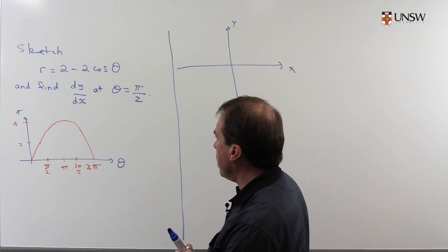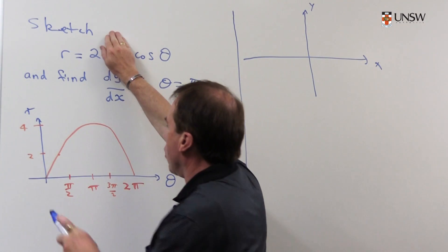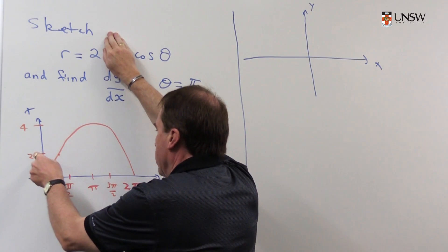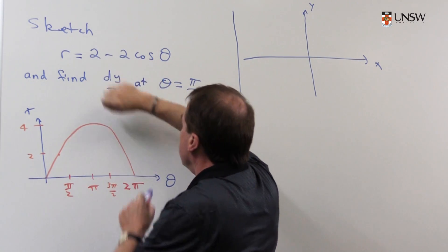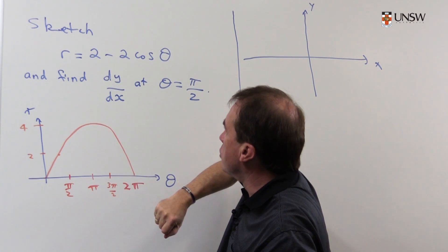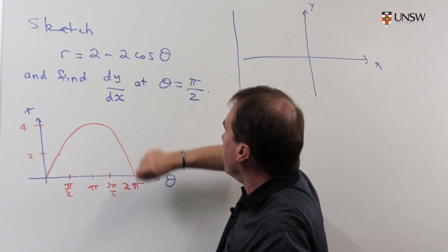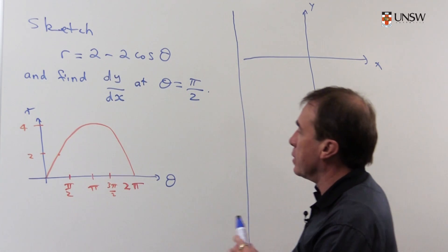So in the r-θ plane, I firstly think about what cos looks like. The cosine would normally start at 1 and go like this. The minus is going to turn it upside down, the 2 stretches it, and then I'm going to move it 2 units up. You ought to be okay at drawing these things.